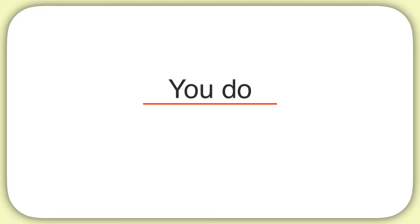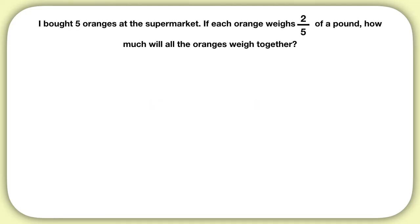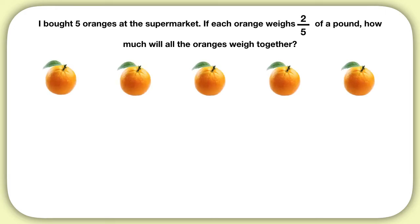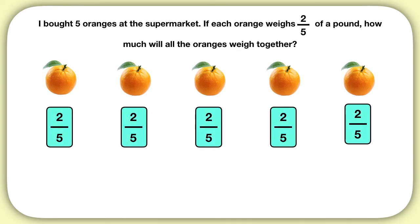Now it's time for you to practice on your own. What is the answer to this problem? In this problem, I am buying 5 oranges, and each one weighs 2 fifths of a pound. We have 5 groups of 2 fifths, or 5 times 2 fifths. To figure out what it equals, we could add this all up and get an answer of 10 fifths. Then we convert this to a mixed number, and this time it's a clean whole number, 2 whole. So all of these oranges together weigh 2 pounds.